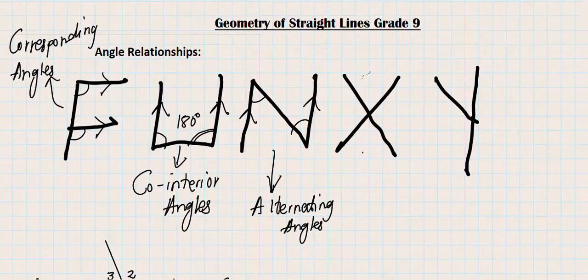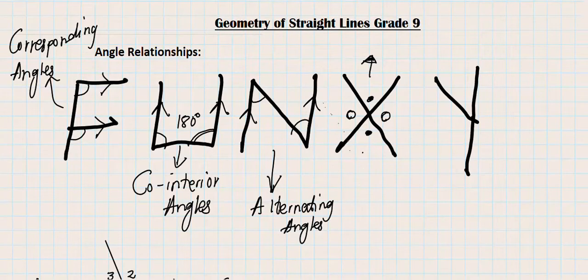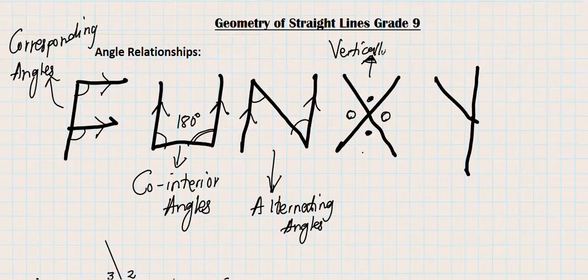Then we have the X formation. The X formation does not need parallel lines. The angles that are opposite to each other are equal — they are vertically opposite angles. The same applies to the other pair: the angle on one side is opposite the angle on the other, and those two angles are equal whenever you see an X formation formed by two straight lines. We call them vertically opposite angles.